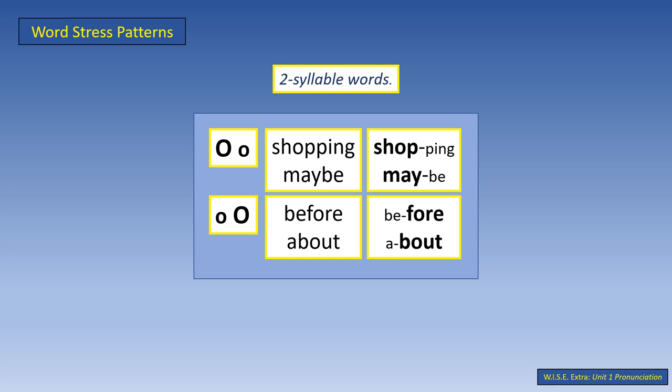Word stress patterns — two-syllable words. English words are stressed on a particular syllable. Two-syllable words can have the pattern DA-det or di-DAR. The word 'shopping' has the pattern DA-det — the stress is on the first syllable. We say 'SHOPping', not 'shopPING'. The word 'before' has the pattern di-DAR — the stress is on the second syllable. We say 'beFORE', not 'BEfore'.